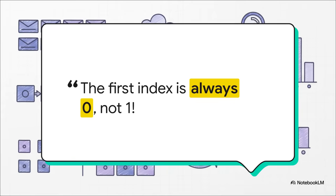Stop everything. This is maybe the single most important rule you'll learn about arrays, and it trips up almost every beginner. In programming, we start counting from zero. The first box is index zero, not one. The second box is index one. Seriously, tattoo this on your brain — counting in programming starts at zero.